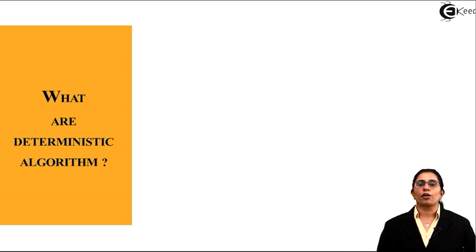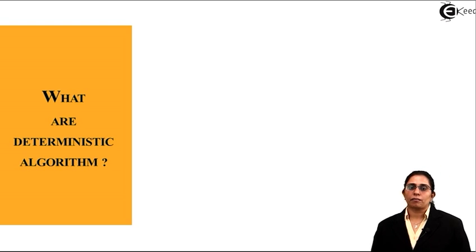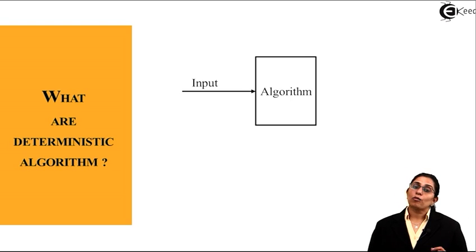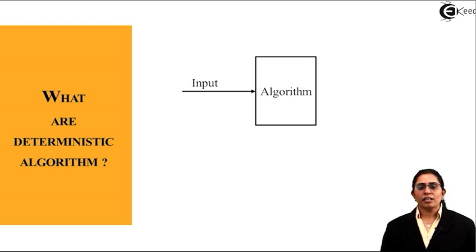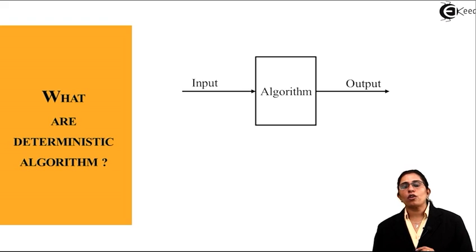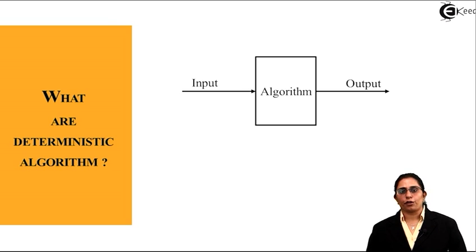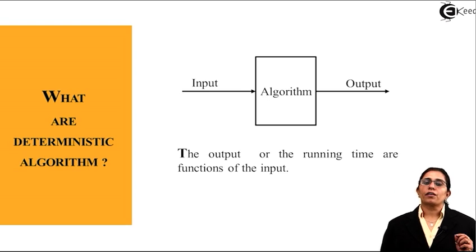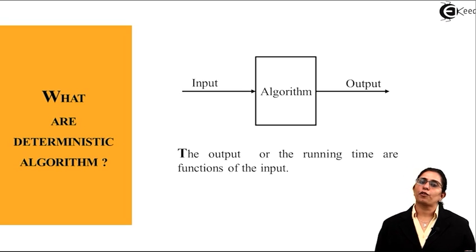What are deterministic algorithms? Let's see graphically. If we have an input and that input is applied to any definite set of rules, those steps are fixed, that is the algorithm part. Then what we get is a required or definite output. This is a regular flow graph for a deterministic algorithm. The output or the running time are functions of input.